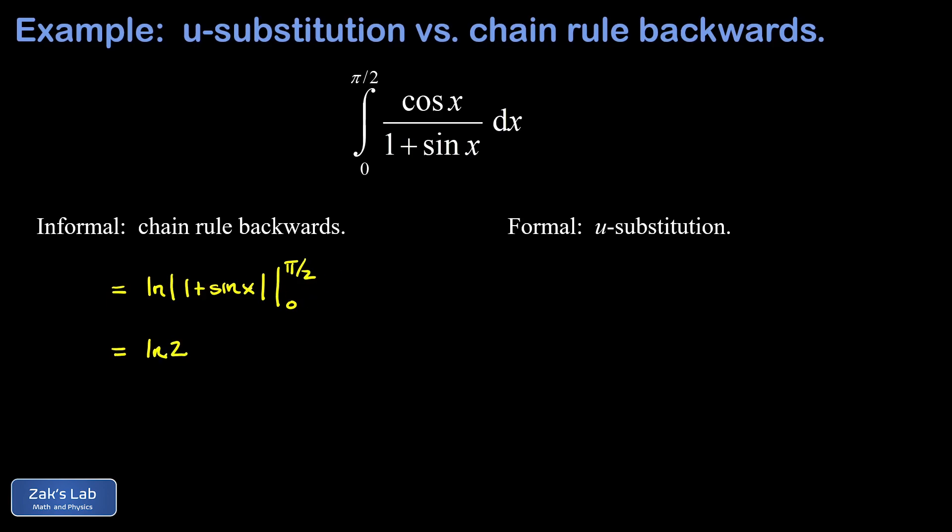When I sub in the lower limit, I get the sine of 0 in there, and that's 0. This gives me the natural log of 1, but that's 0. So that piece vanishes, and we have the result of the integral. It's just natural log 2.